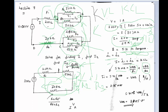Since both resistances are the same, i1 equals i2 and the current divides equally, so each can be written directly as i divided by 2. To find V_ab, multiply the total current 5.71 milli ampere by the equivalent resistance. Since both R values are 10 ohm, simplifying gives approximately 28.55 volts.